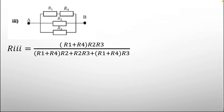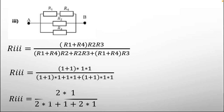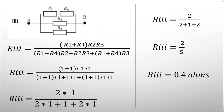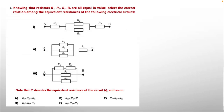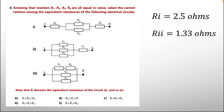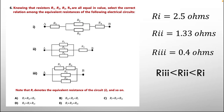For circuit 3, R1 and R4 are in series while the others are in parallel. By applying the formulas and solving, R3 equivalent = 0.4 ohms. Now comparing all three: R1 = 2.5 ohms, R2 = 1.33 ohms, R3 = 0.4 ohms. The relation is R3 < R2 < R1, which corresponds to option B.